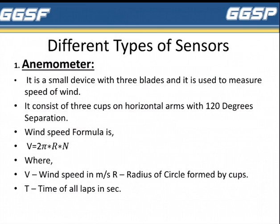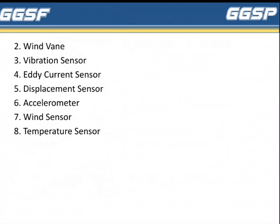There are different types of sensors. First is the Anemometer — a small device with three blades used to measure the speed of wind. It consists of three cups on horizontal arms with 120-degree separation. The formula for wind speed is V = 2π × R × N, where V is wind speed in meters per second, R is the radius of the circle formed by the cups, and T is the time of all laps in seconds.